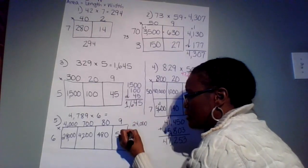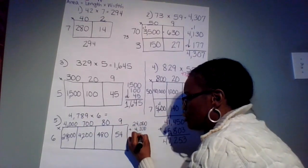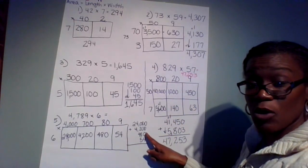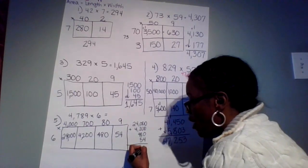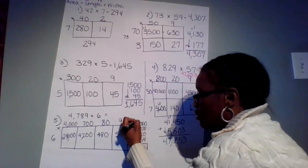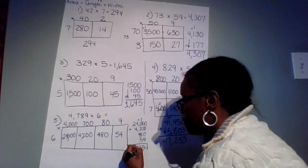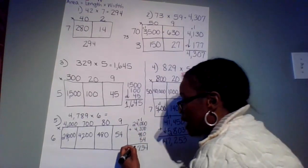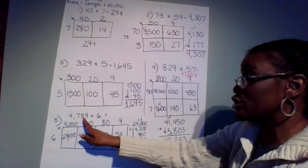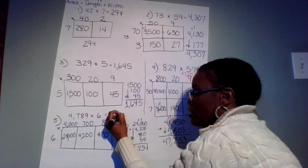Now I add vertically: 24,000 plus 4,200 plus 480 plus 54. Four plus 0 plus 0 plus 0 is 4; 8 plus 5 is 13, carry the 1; 4 plus 2 is 6, plus 1 is 7; 4 plus 4 is 8; bring down the 2. So 4,789 times 6 is equal to 28,734.